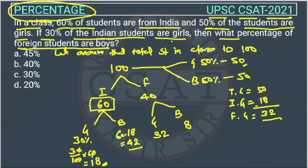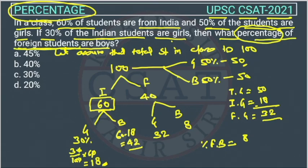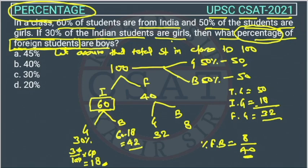If foreign girls are 32, then foreign boys will be 40 minus 32, which equals 8. Now we have to find the percentage of foreign boys. The formula is: foreign boys divided by total foreign students, multiplied by 100.